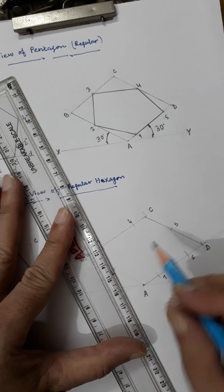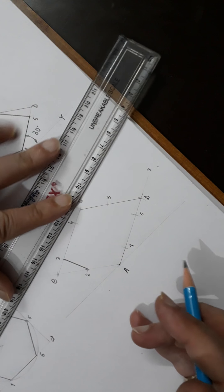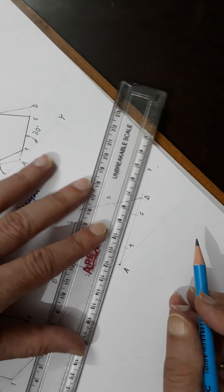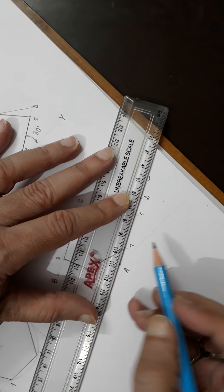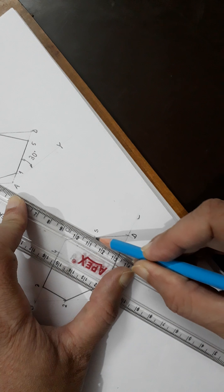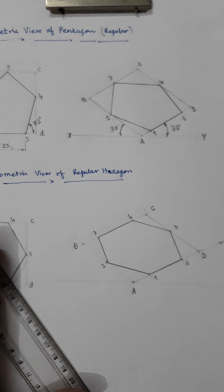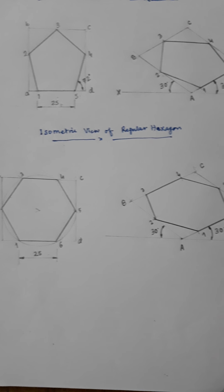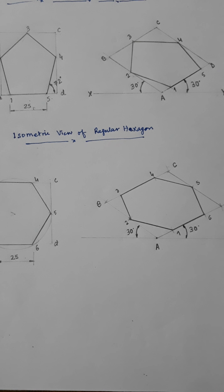Now join these points with continuous thick lines. That will give you the isometric view of the regular hexagon. Now it is complete — you can check. The dimensioning shows 30 degrees on both sides and 25mm is the side length of the regular hexagon. I hope you got it, thank you very much.